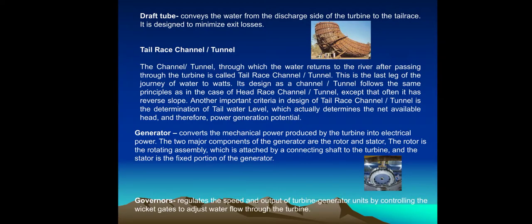Governors: The governor regulates the speed and output of turbine-generator units by controlling the wicket gates to adjust water flow through the turbine.